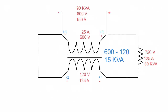This is a boost connection, where the flux is boosting to give an overall voltage of 720 volts — the voltages add together. Notice that for the boost connection, 25 amps plus 125 amps gives us 150 amps, which is a good way to double-check. The same approach works for a buck connection: 25 amps minus 125 amps gives the 100 amps we calculated before. That's a great way to verify your work.